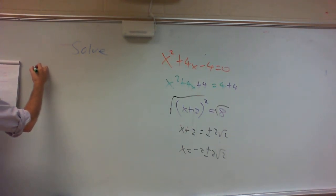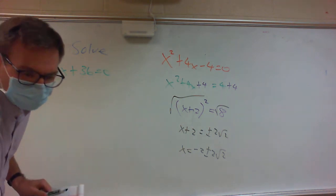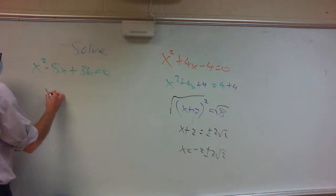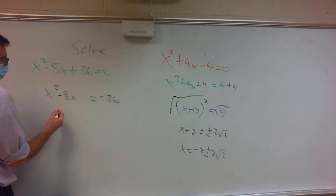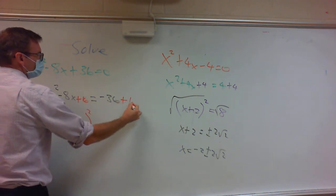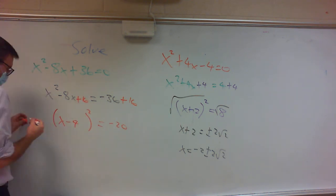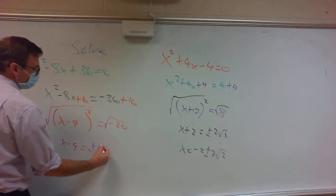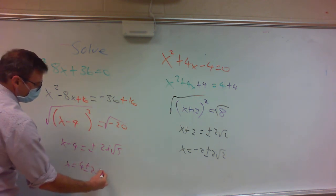One more: solve x squared minus 8x plus 36 equals 0. We go through the same process. Move the constant: x squared minus 8x equals negative 36. Complete the square — half of negative 8 is negative 4, squared gives plus 16. Add 16 to both sides: negative 36 plus 16 gives negative 20. Take the square root of both sides: x minus 4 equals plus or minus 2i square root of 5. So x equals 4 plus or minus 2i square root of 5.